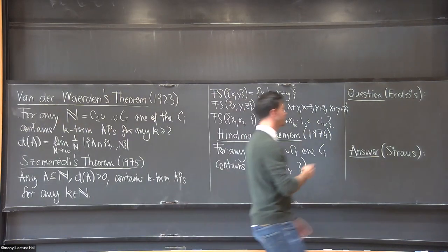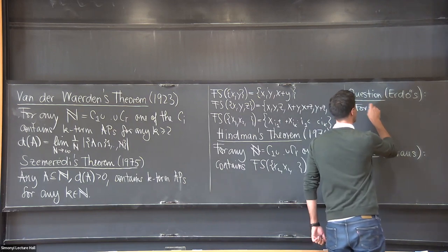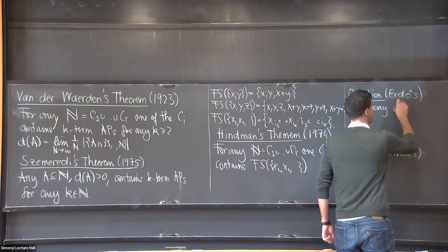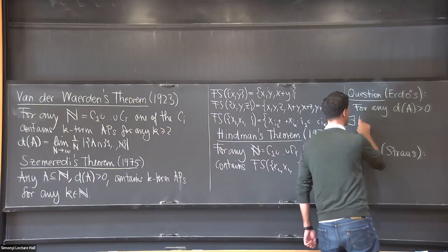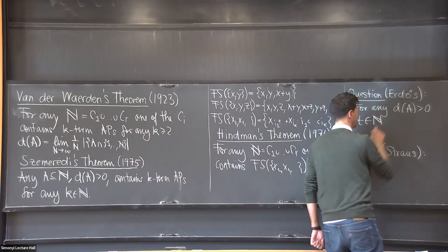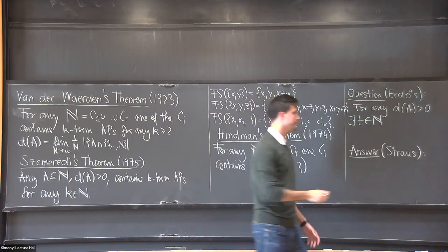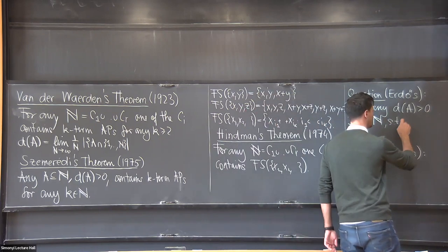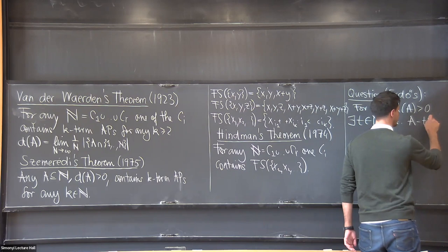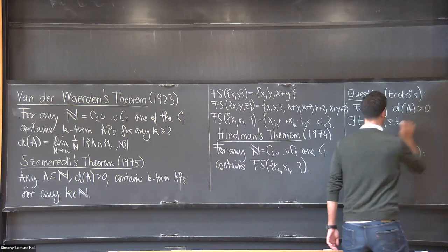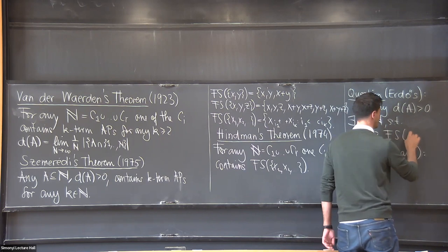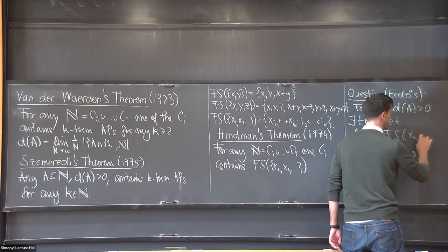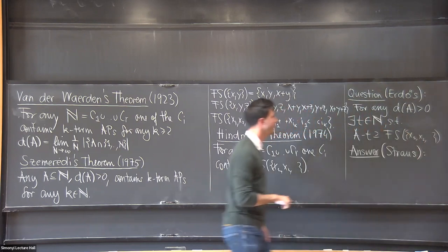So Erdős asked: is it true that for any set with positive density, there exists a shift—all I have to do is shift it—such that the shift contains, A minus T contains an infinite finite sum set?